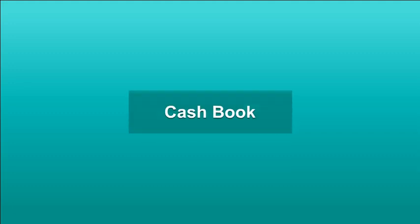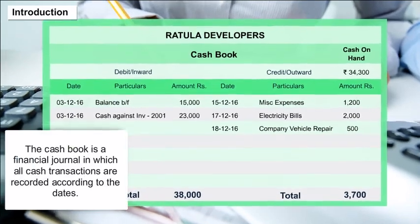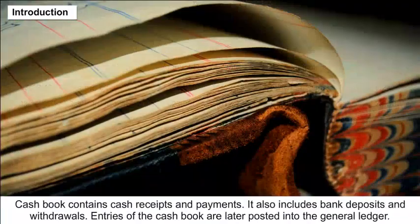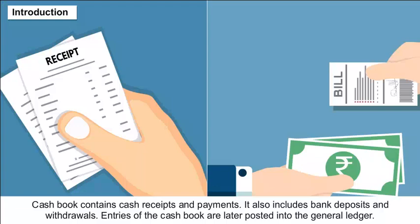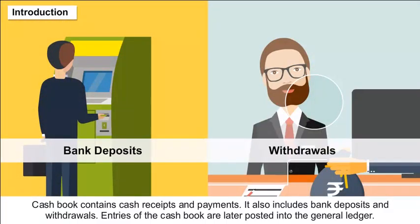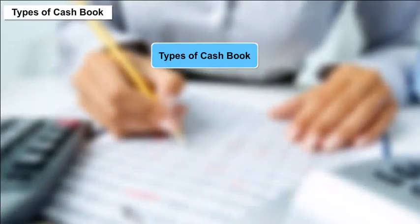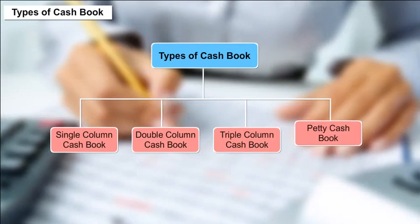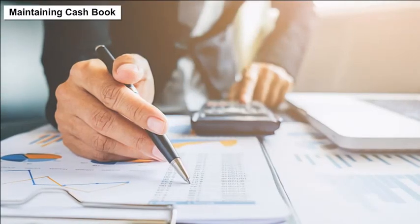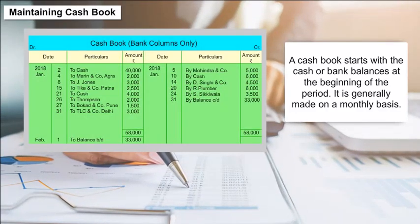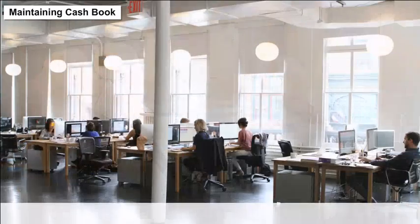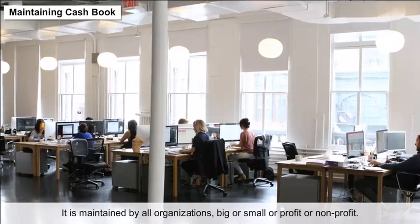Cash Book Introduction: The cash book is a financial journal in which all cash transactions are recorded according to the dates. The cash book contains cash receipts and payments. It also includes bank deposits and withdrawals. Entries of the cash book are later posted into the general ledger. Types of cash book include: single column, double column, triple column, and petty cash book. A cash book starts with the cash or bank balances at the beginning of the period and is generally made on a monthly basis.